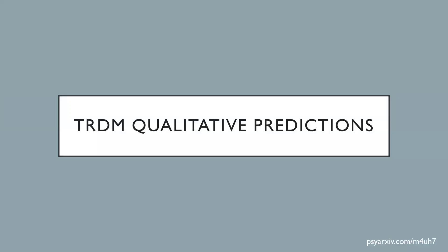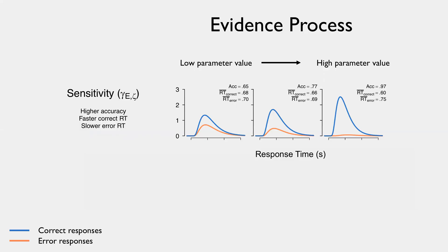So preprint of the work that I'm talking about today is available at this SciArchive link. I'm first going to walk through some of the qualitative predictions of this model. So in the evidence process, I want to highlight that we get the same kind of interpretation out of this as we do with standard evidence accumulation models.